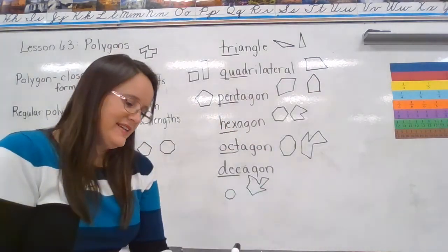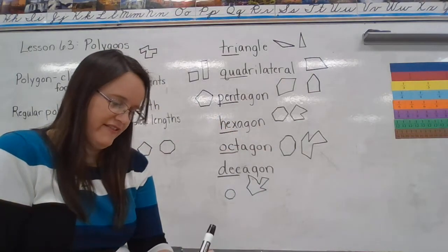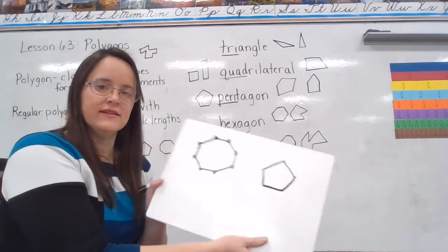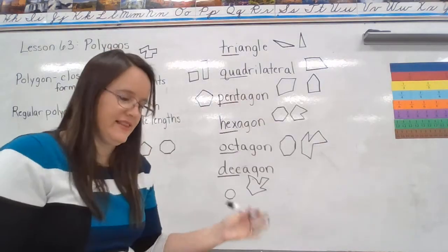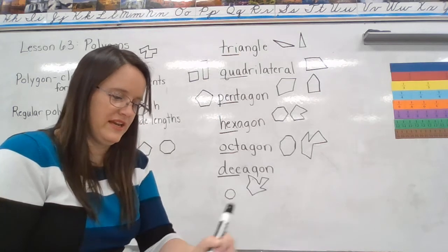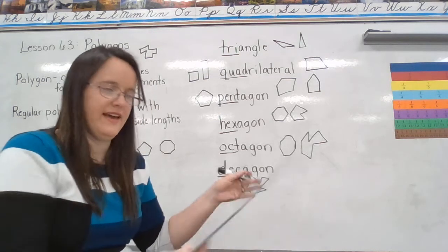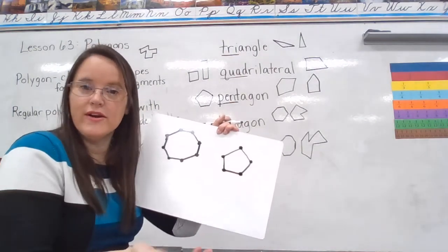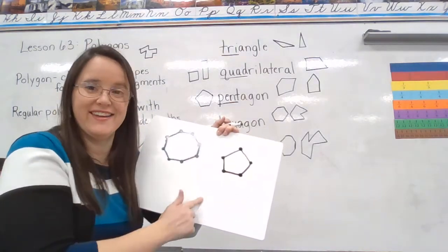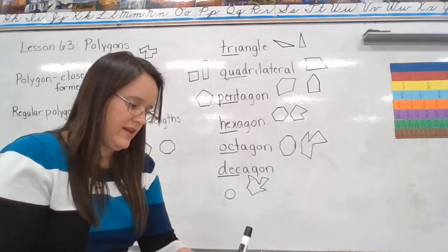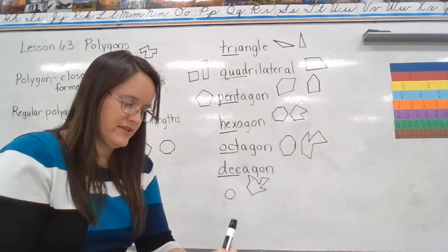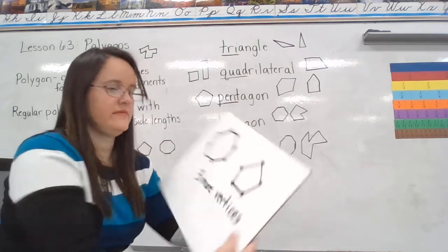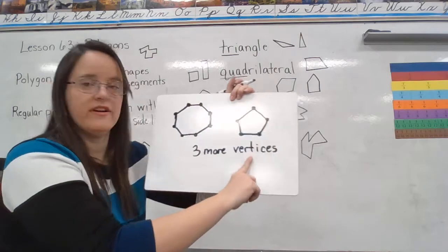How many vertices do you think a pentagon is going to have? Here's my pentagon — let's count: one, two, three, four, five. So eight in the octagon, five in the pentagon. How many more? Three more vertices.